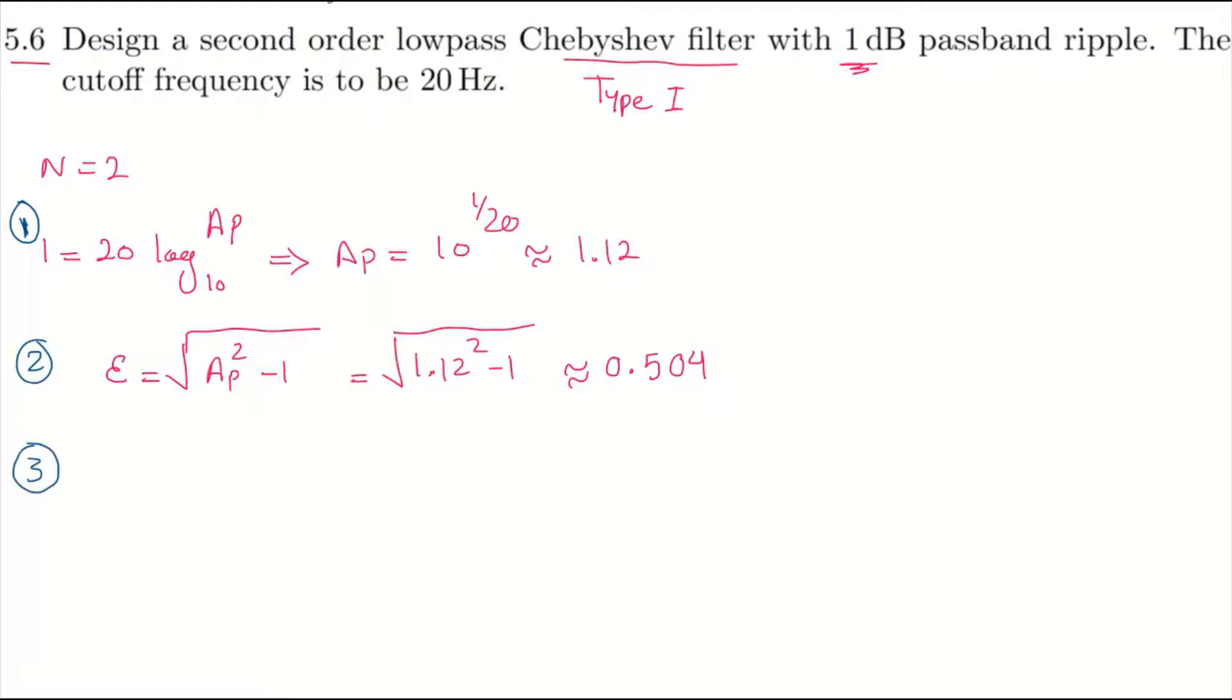The general form of the transfer function for a second order Type 1 Chebyshev filter is like this: 1 over 2 times epsilon.